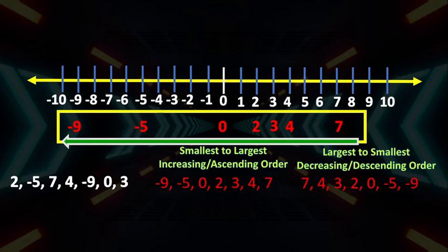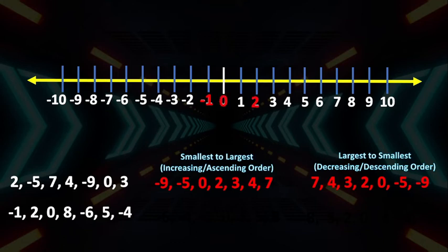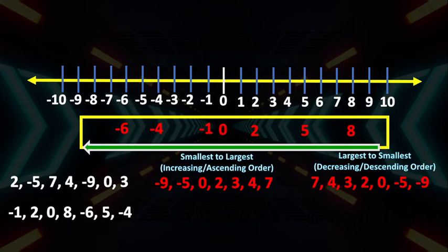Let's have another example. Let's arrange these integers and plot them on the number line. So: negative 1, positive 2, 0, positive 8, negative 6, positive 5, and negative 4. The numbers are plotted on the number line. If we are going to arrange them from largest to smallest, or in decreasing or descending order, we write the set of integers from right to left. So the largest number here is 8, 5, 2, 0, negative 1, negative 4, and negative 6.